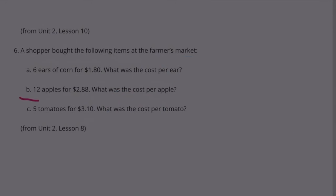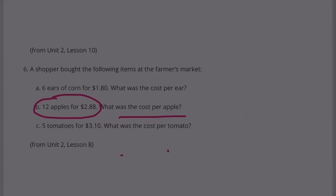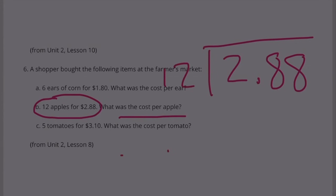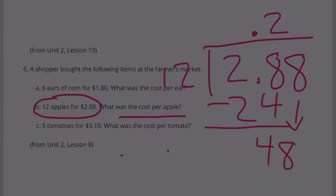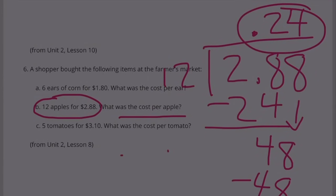Part B: 12 apples for $2.88. What was the cost per apple? $2.88 divided by 12. How many times does 12 go into 28? That's 2. 2 times 12 is 24. How many times does 12 go into 48? 4. 4 times 12 is 48. We have zero remainder. Each apple costs $0.24.